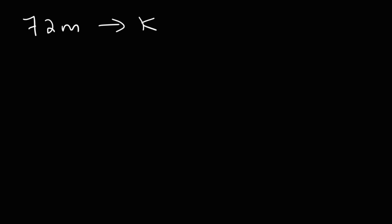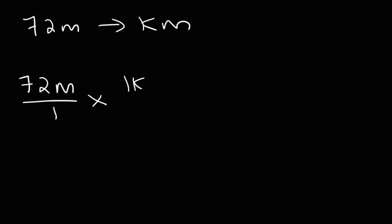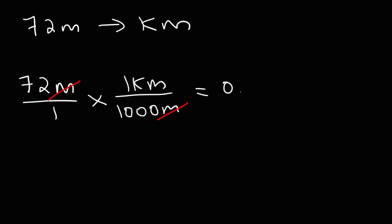Here's a practice problem: convert 72 meters into kilometers. Starting with 72 meters, we know one kilometer is equal to 1,000 meters, so the setup is the same as the last problem. It's 72 divided by 1,000, or move the decimal point three units to the left, giving us 0.072 kilometers.